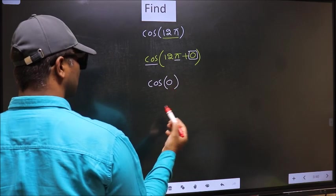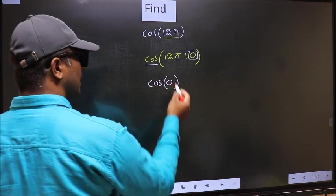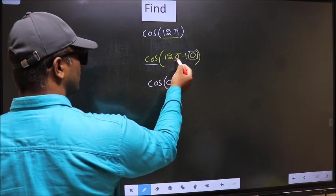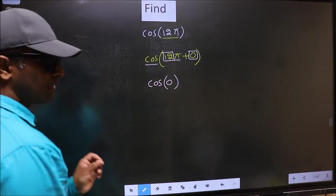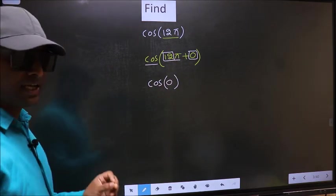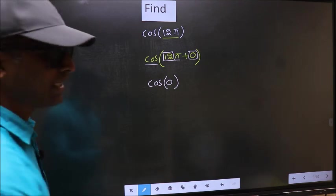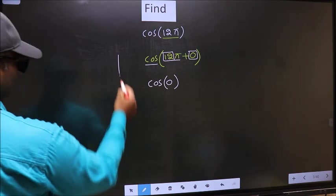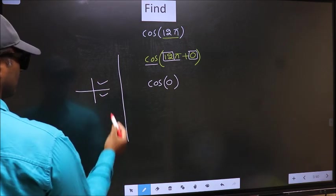Now the question is, will we get here plus or minus? To answer that, you should look at the number before π, which is 12, and 12 is even, and all the even multiples of π lie either in the first quadrant or in the fourth quadrant.